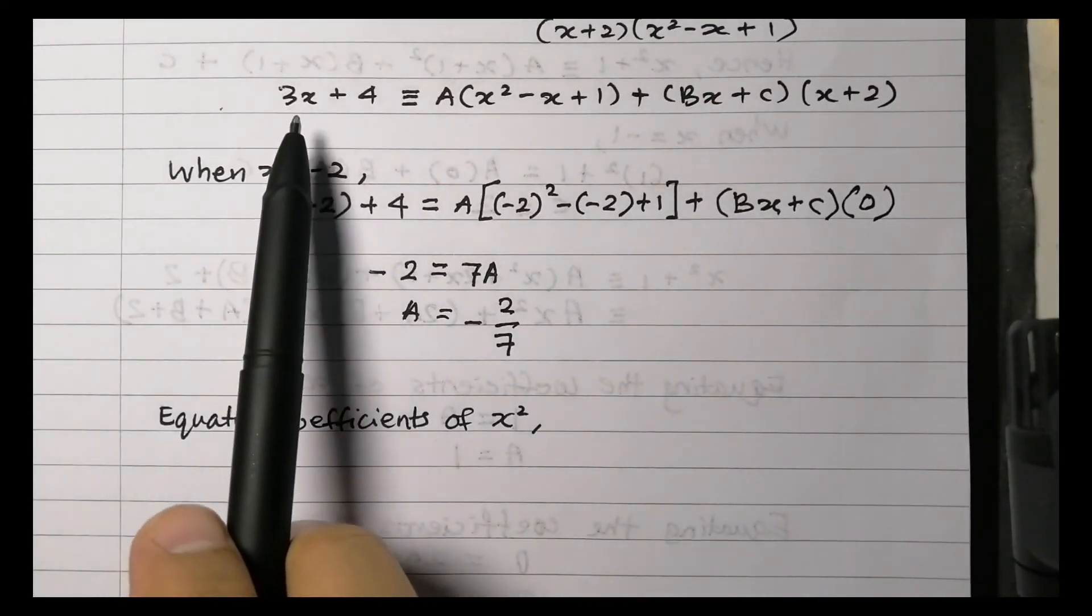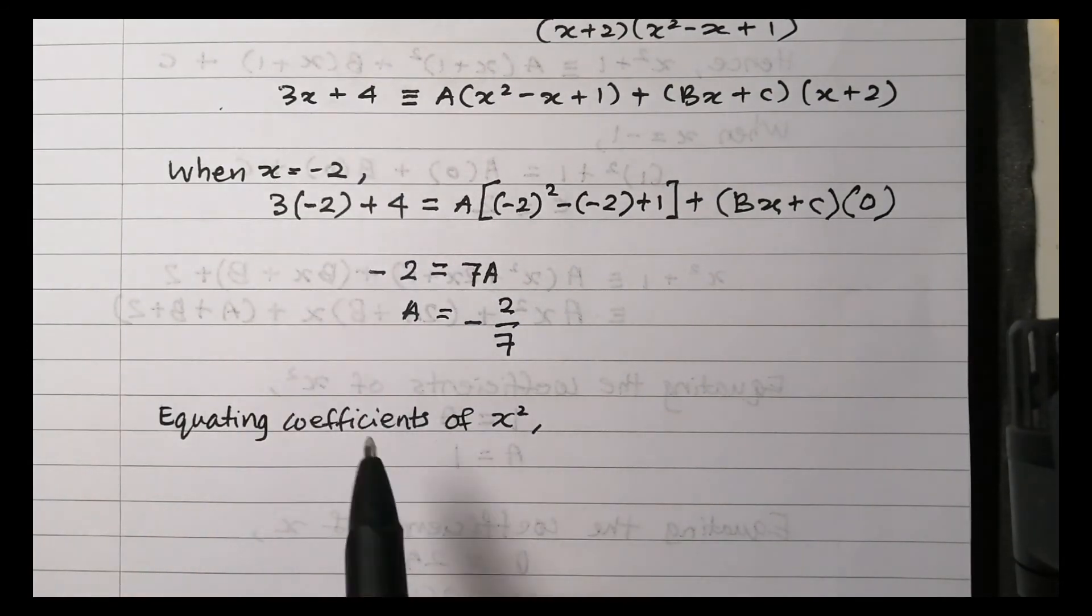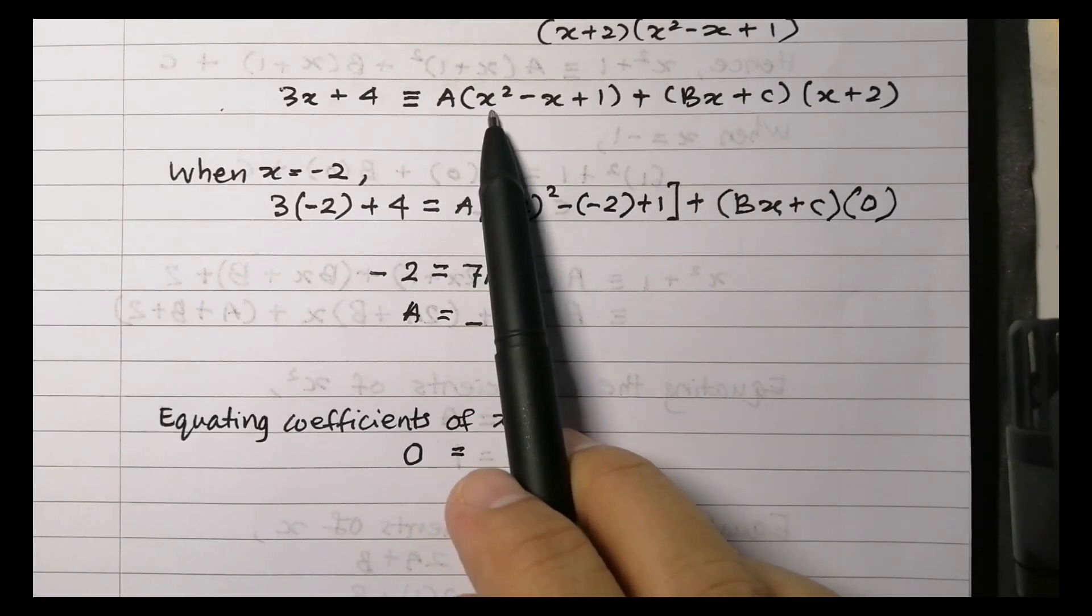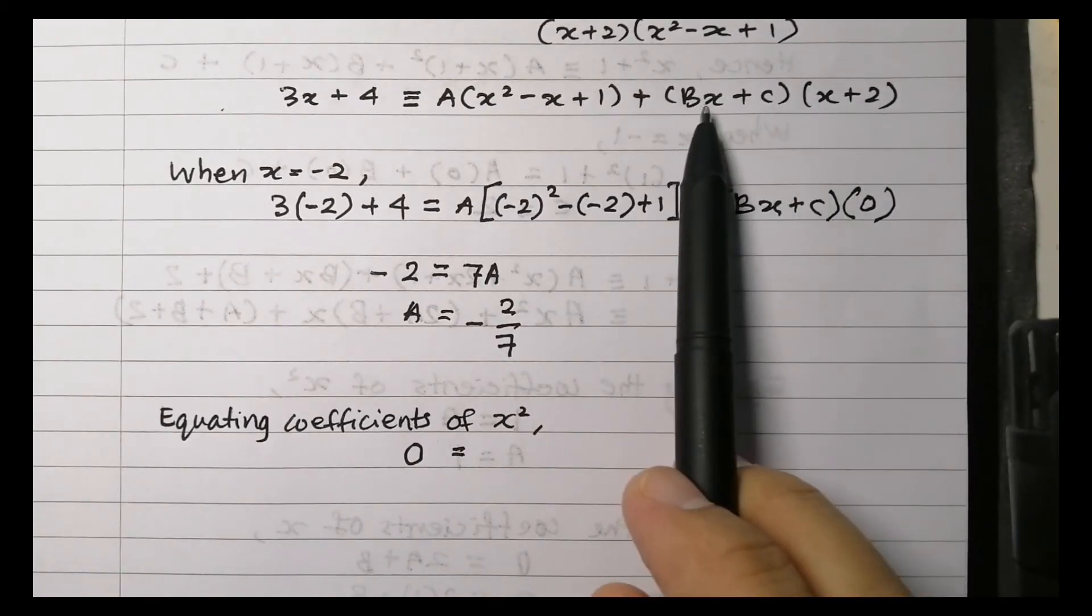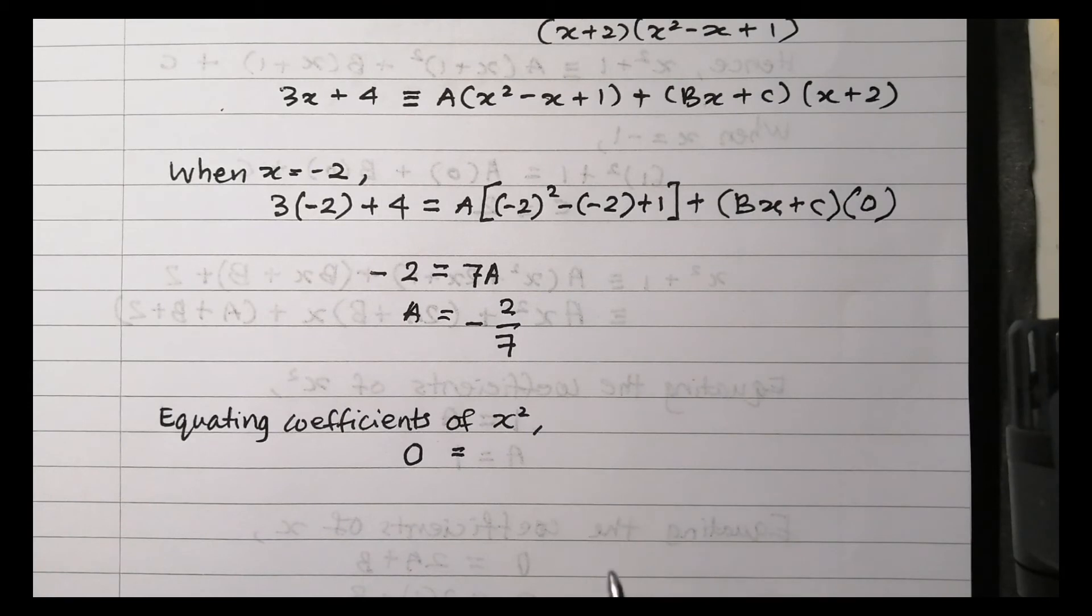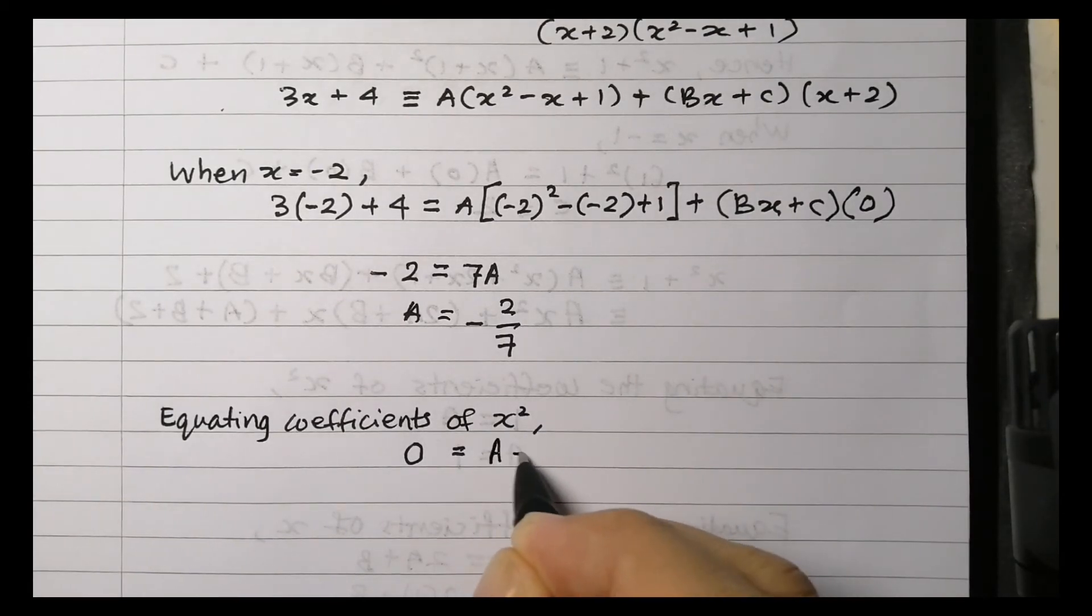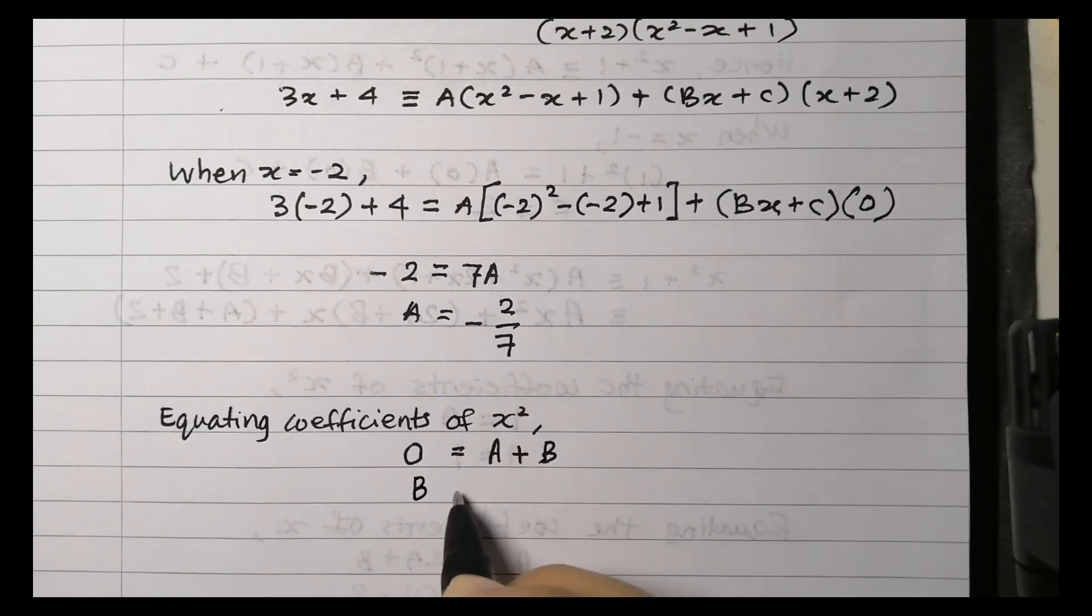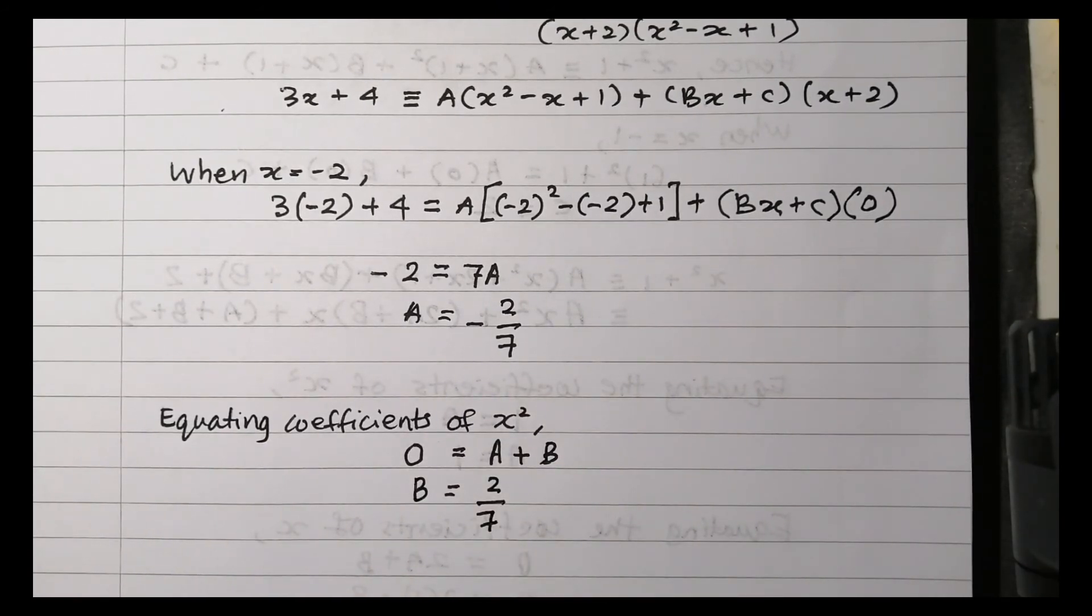The coefficient of X squared from the left-hand side is 0, and on the right-hand side is A plus B. A from the previous step, therefore B equals 2 over 7.